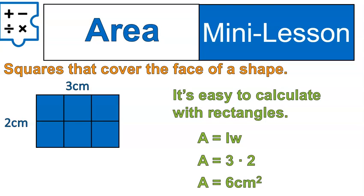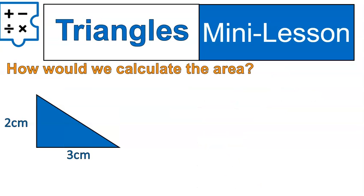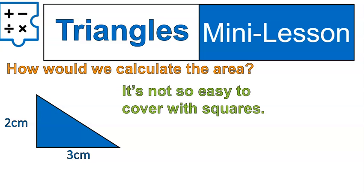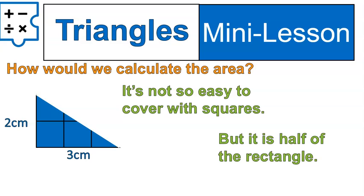The problem is, when you get into triangles, you're getting into a different shape, and it's not as easy to fill it up with squares. Watch what I mean. So I have this triangle, and I'm wondering how would I calculate the area, right? It's not super easy to just cover it with squares, right? Because there would be portions of it that are included and portions of it that are not. However, you might notice something about this specific triangle. It's half of a rectangle. And that's where we get our equation. The equation for the area of a triangle is that you take the base times the height, and you divide it by two.